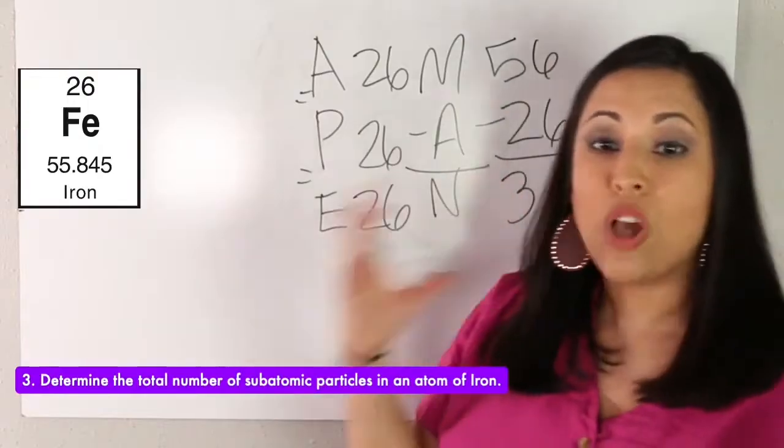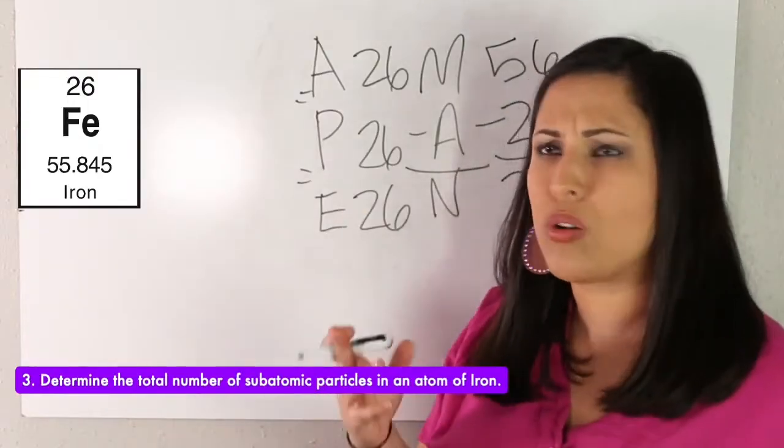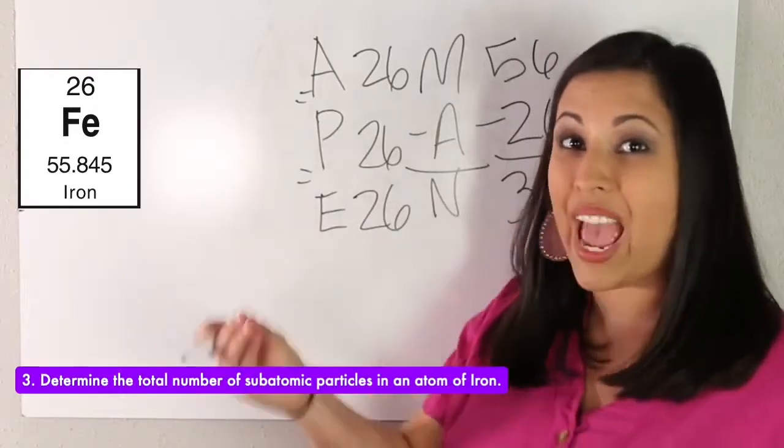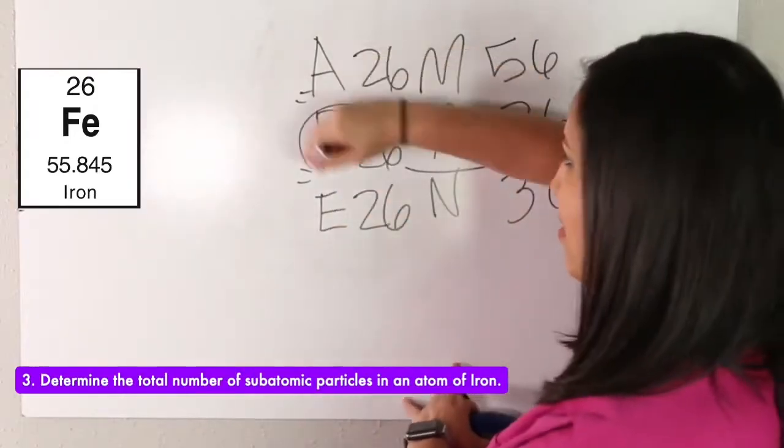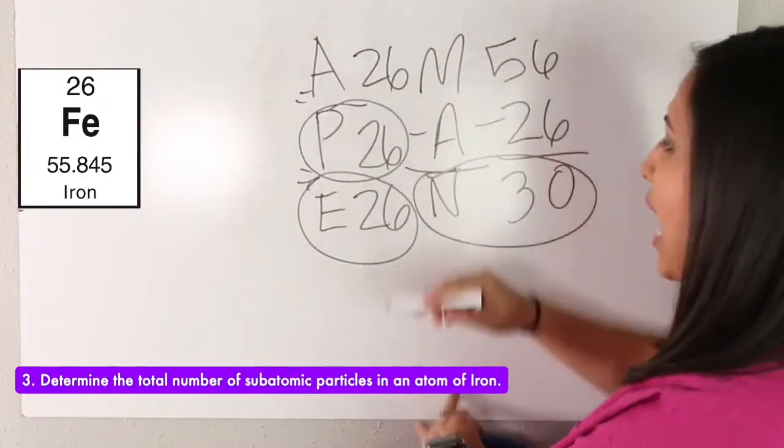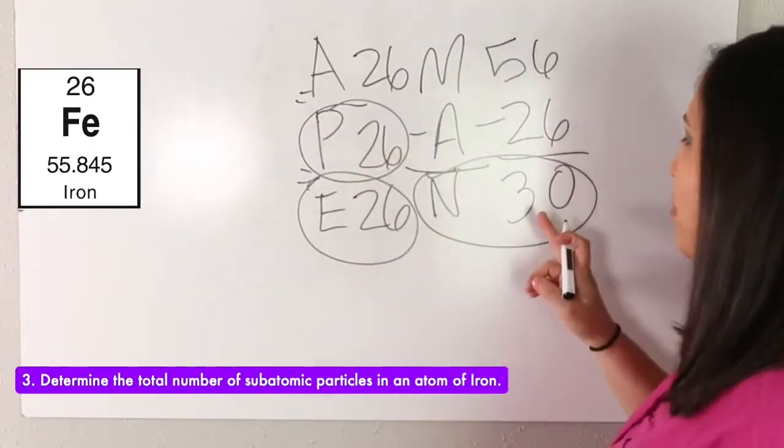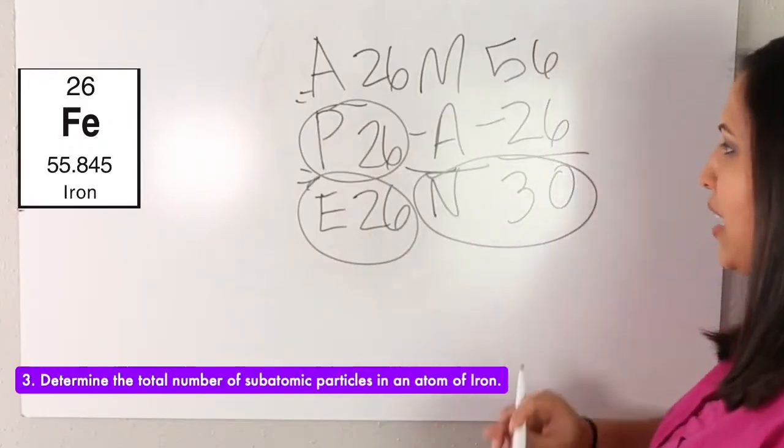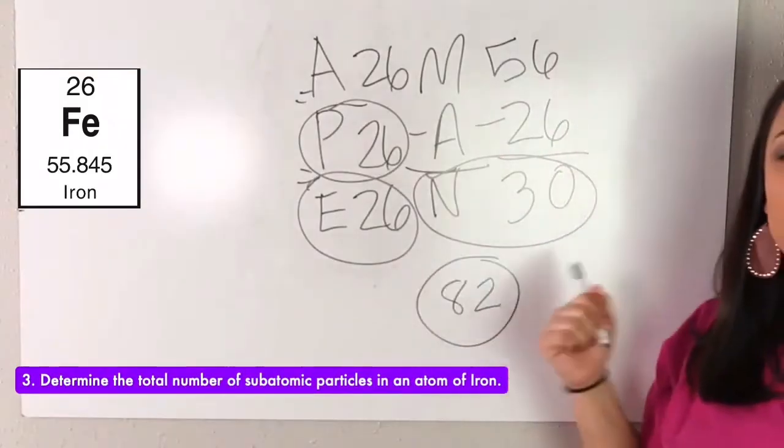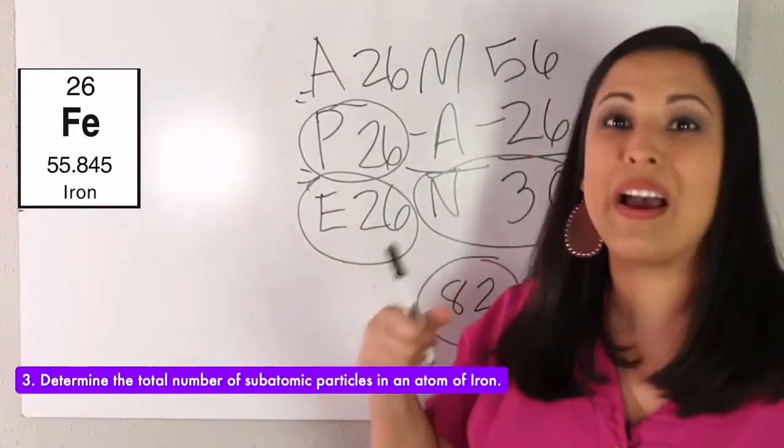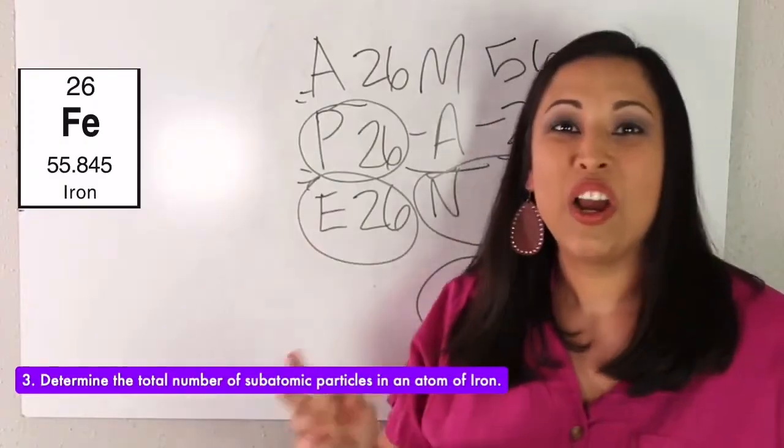All right. So total number of subatomic particles. Which of these are the subatomic particles? The parts of an atom? Our P-E-N. So we're going to add all of those up. 26 plus 26 plus 30. Use your handy dandy calculator and you would get 82 total number of subatomic particles in an atom of iron. Great job.